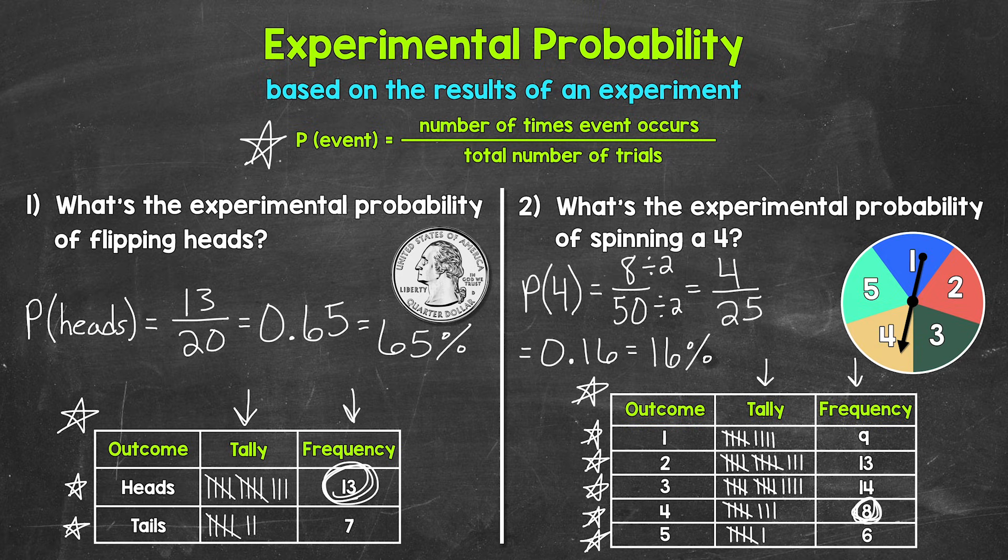For example, for number one, instead of flipping the coin just 20 times, what if we flipped it 100 times, 1,000 times, or even 10,000 times? As those trials increase, the experimental probability tends to get closer to the theoretical probability.